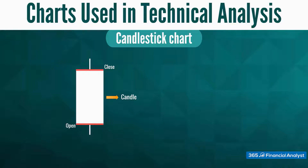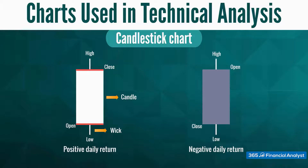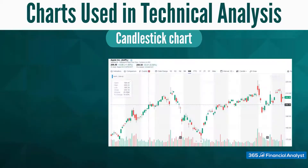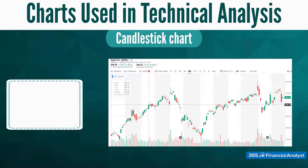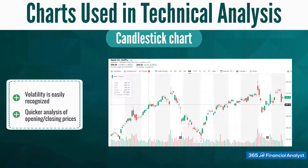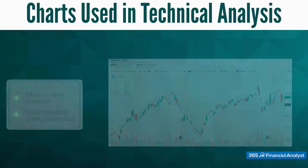The tiny lines below and above the candle are called the wick — they signify the high and low price of the security during the trading day. On days when the security closed higher than its opening price, the candle will be unshaded, while days when it closed lower, the candle will be shaded. The advantage of the candlestick chart over the bar chart is that it allows us to more easily observe volatility and facilitates quicker analysis of opening and closing stock prices.